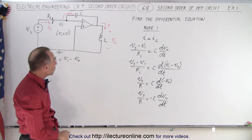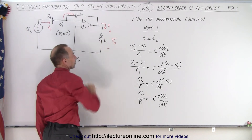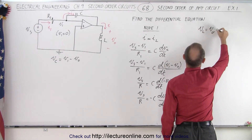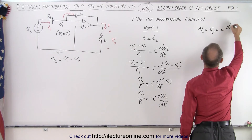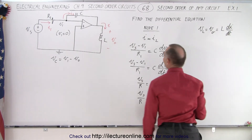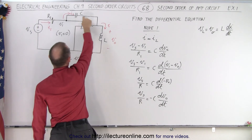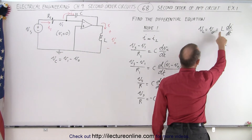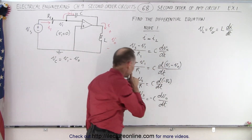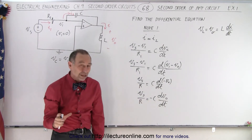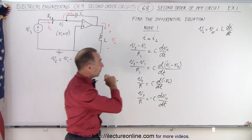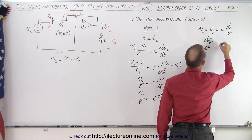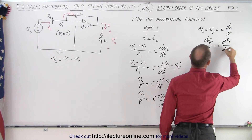Now we need to come up with an equation to describe the output voltage across the inductor. The voltage across the inductor, which equals the output voltage, is equal to the inductance times the rate of change of the current with respect to time. The current here is the same current I, so the output voltage equals L·di/dt. Since we also have the derivative of the output voltage in our equation, we take d(V_out)/dt, which equals L times the second derivative of the current with respect to time.